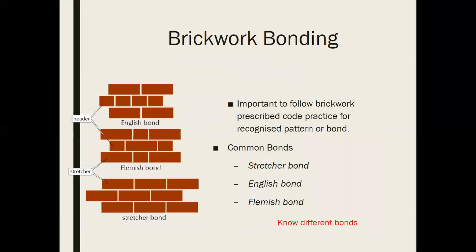Brickwork and bonding requires following prescribed codes of practice for recognized patterns or bonds. The common bonds are: the stretcher bond, where alternate courses are offset by half a brick; the English bond, which alternates rows of headers and stretchers and is used for double walls; and the Flemish bond, which alternates headers and stretchers within the same course.